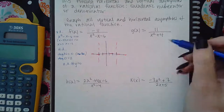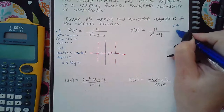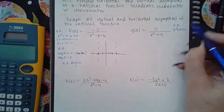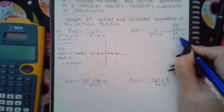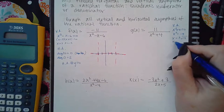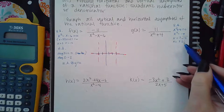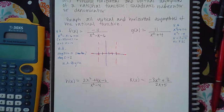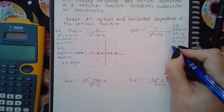For the next problem, to find the vertical asymptotes I set x squared plus four equal to zero. I get x squared equals negative four, so x equals plus or minus the square root of negative four, which is two i. You cannot graph imaginary numbers, so there will be no vertical asymptotes to graph for this one.